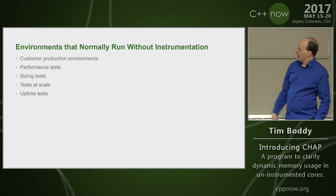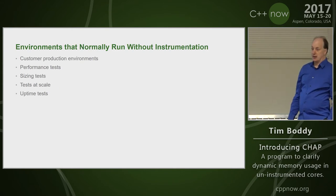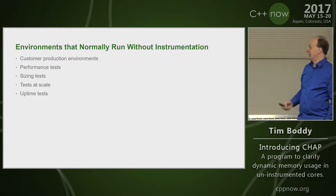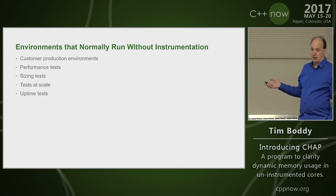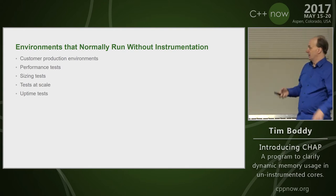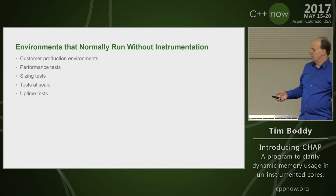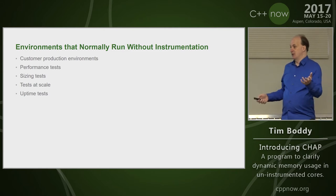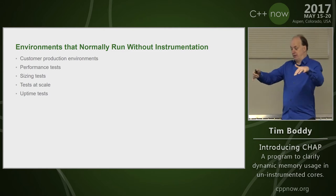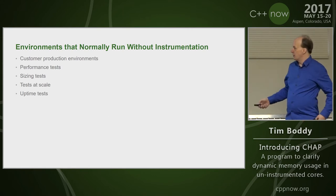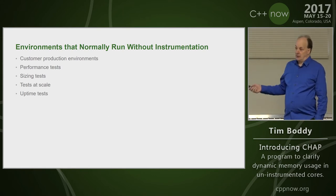There are all these environments that run without instrumentation. You're not going to tell a customer to run Valgrind in production. For a performance test you want an exact number; if you want to know how big the process is actually getting, you don't want to add to it. If you're running tests to see what test size you can fit into a particular hardware setup, you don't want this overhead, and for uptime tests you want to be testing with your real stuff.